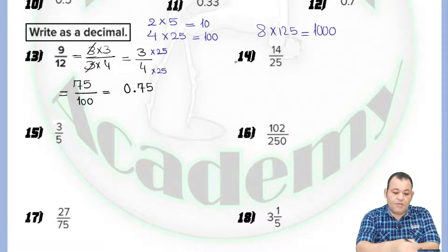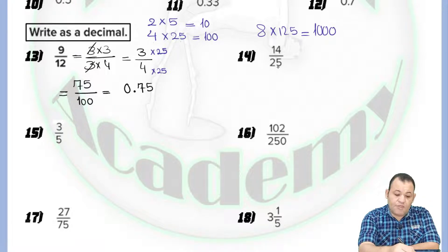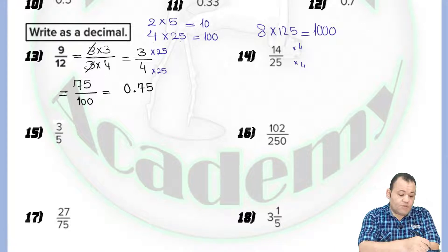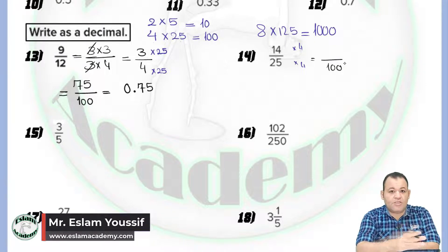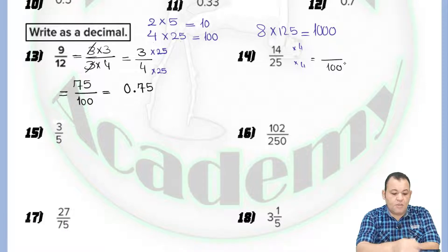For number four, we have fourteen over twenty-five. Since we have twenty-five, multiply by four to make the denominator equal one hundred, because the decimal is a fraction with denominator ten, hundred, thousand, and so on. I multiply both numerator and denominator by four.